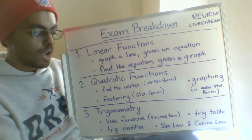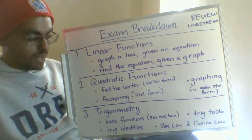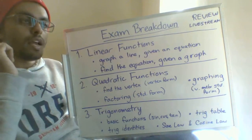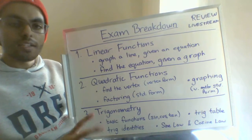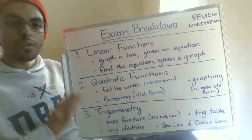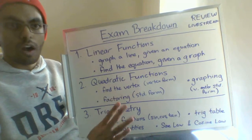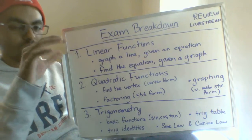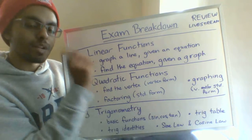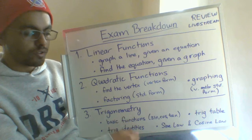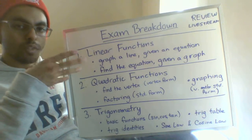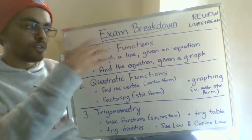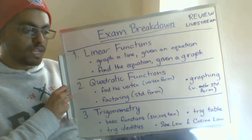Everything goes back to triangles, as it should based on the name trigonometry. You should know those two identities and you should also know the trig table — at least the top half: the sine line, the cosine line, and the tangent line. You can memorize all the values, or memorize the sine line using the square root pattern and figure out cosine and tangent from that first line. Either way, you're responsible for knowing the top half of the table.